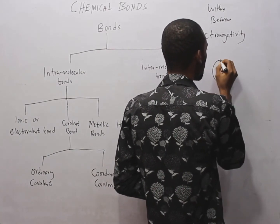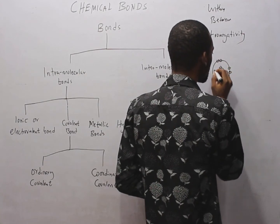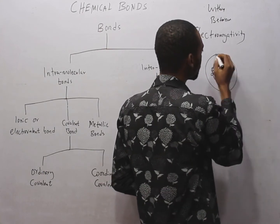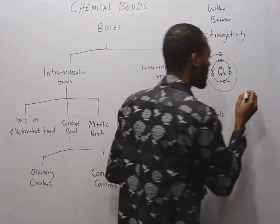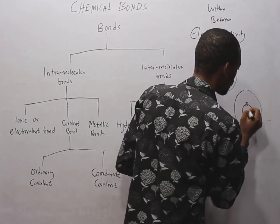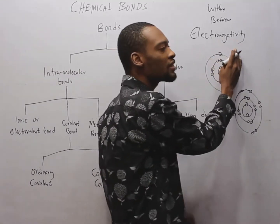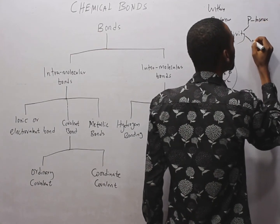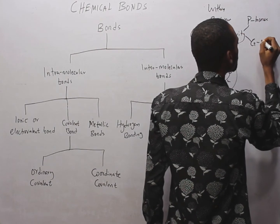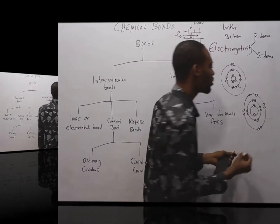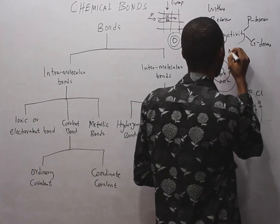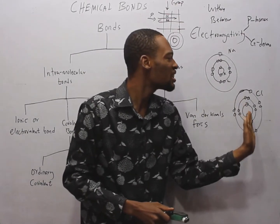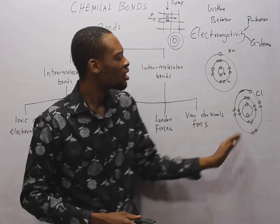For example, consider sodium with atomic number 11 and chlorine. Electronegativity increases across the period and decreases down the group. Chlorine is more electronegative than sodium, so there is a large electronegativity difference between them.